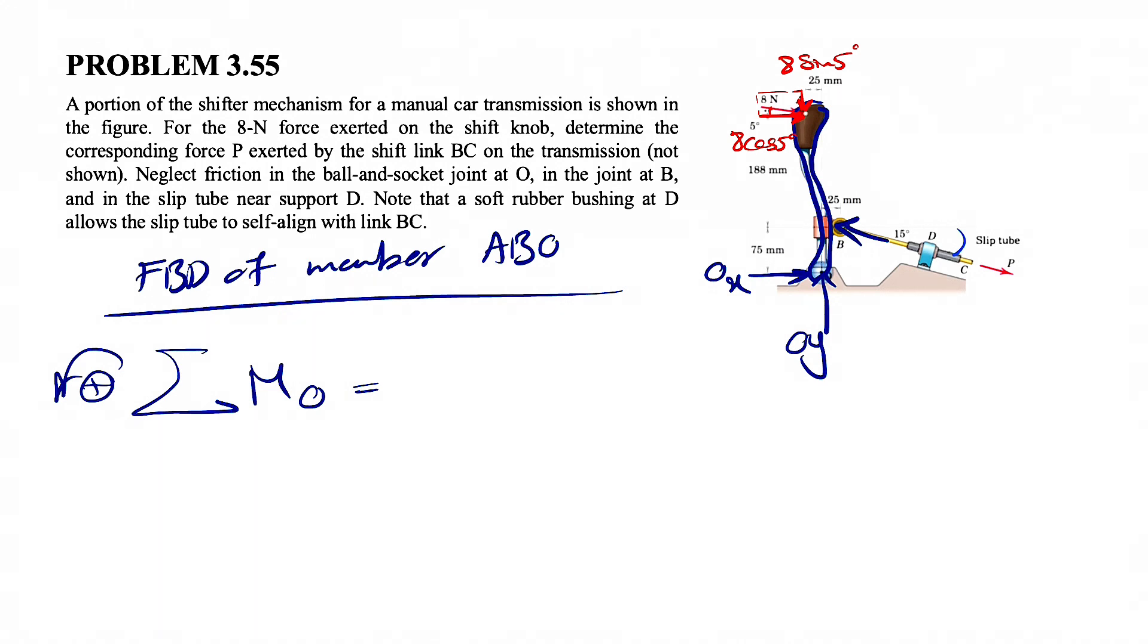And for the P, we're going to have the same story. We know this angle right here is 15 degrees. So this will be P cosine of 15 degrees, and this would be P sine of 15 degrees.